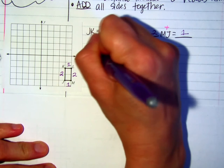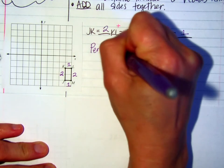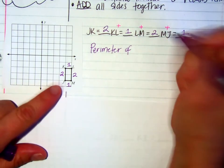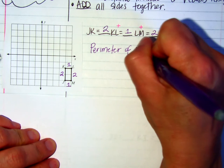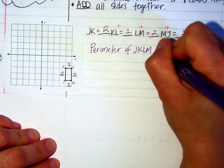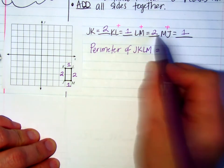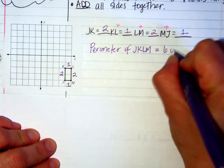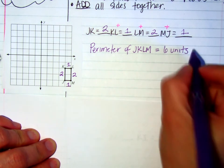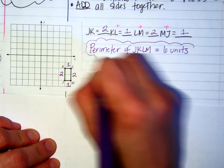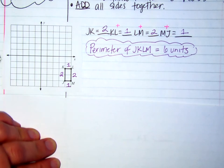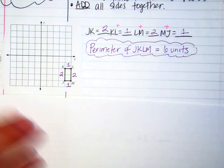So two plus one plus two plus one. So the perimeter of figure JKLM is equal to two, three, five, and then six units. Not too bad, right? Just have a few more for you.